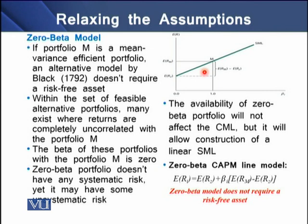A zero beta CAPM model can also be presented like the regular CAPM model. In this model, the expected return on security i is equal to the expected return on the zero beta portfolio. This zero beta rate of return, denoted RZ, replaces the risk-free rate RFR. So the zero beta model generally does not require any risk-free asset.